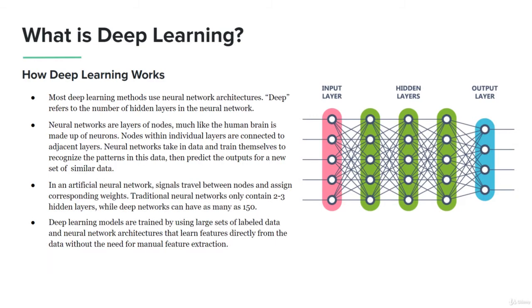In an artificial neural network, signals travel between nodes and assign corresponding weights. Traditional neural networks only contain two to three hidden layers, while deep networks can have as many as 150. That's quite a bit there. A lot more processing, a lot more bandwidth that is essentially needed and required.